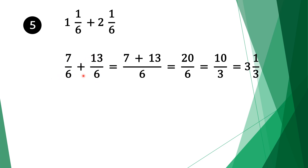We have the same denominators, so we take 6 as the common factor. 6 divided by 6 is 1, 1 times 7 is 7. Move the plus sign over. Do the same for the second fraction: 6 divided by 6 is 1, 1 times 13 is 13. So 7 plus 13 is 20, and we bring the 6. Top and bottom are divisible by 2: 20 divided by 2 is 10 and 6 divided by 2 is 3, so our result is 10 over 3. As a mixed fraction, our solution is 3 and 1 third.